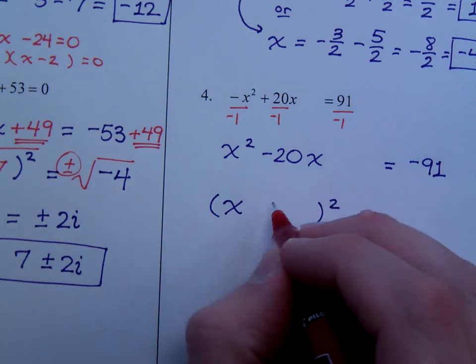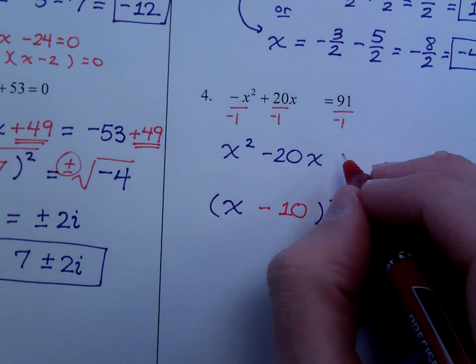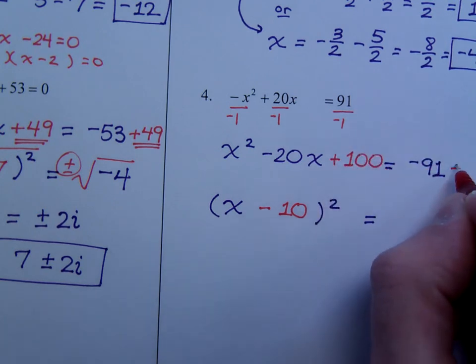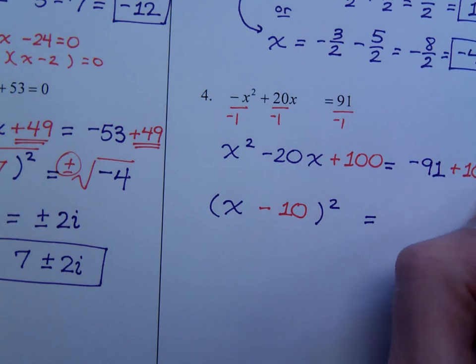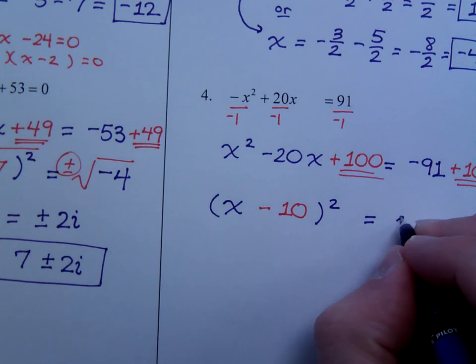On the left side here, this is going to be a square when it's all said and done. Half of negative 20 is negative 10. Negative 10 squared is a positive 100. So, I have to add 100 to both sides here. So, negative 91 plus 100 is 9.